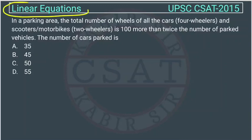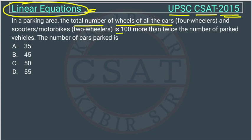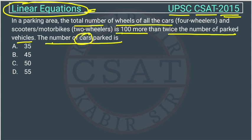This is a type of linear equation question asked by UPSC in their CSAT paper of 2015. In a parking area, the total number of wheels of all the cars and scooters and motorbikes is 100 more than twice the number of parked vehicles. The number of cars parked is what we need to find.